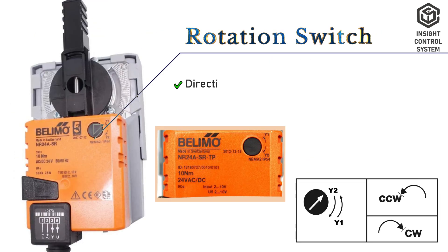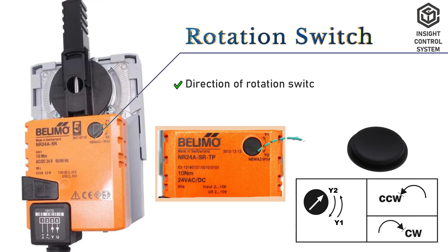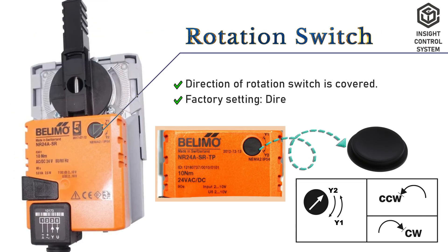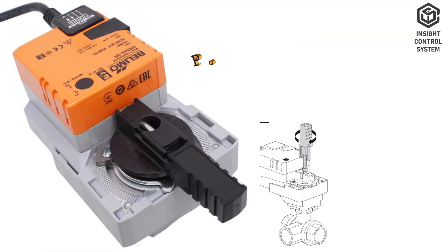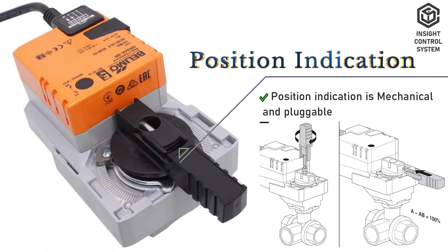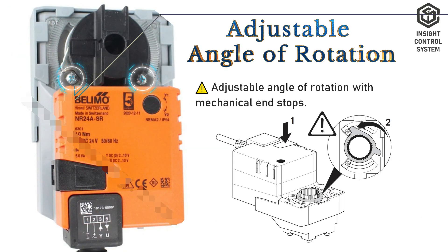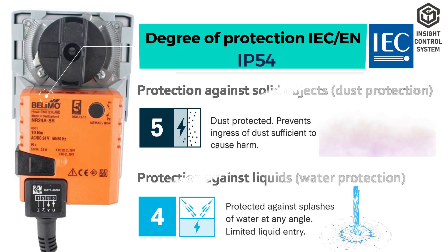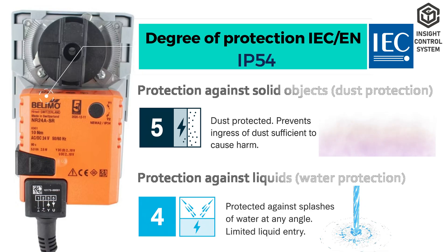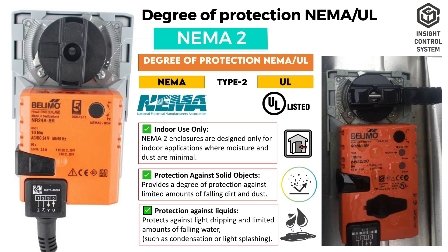This is the direction switch. The direction of rotation switch is covered and the default factory setting is Y2. This is the position indication, which is mechanical and pluggable. This too is the adjustable angle of rotation with mechanical end stops. Degree of protection IEC EN is IP54. Degree of protection NEMA UL is NEMA 2.